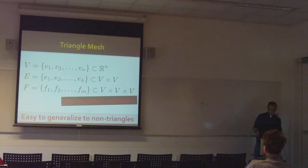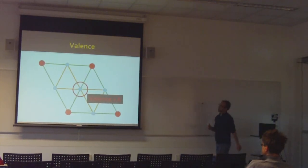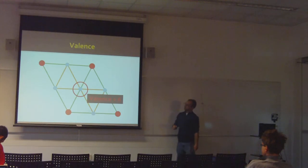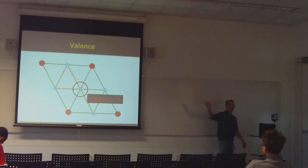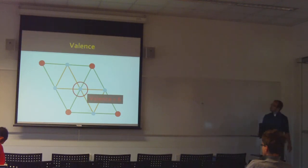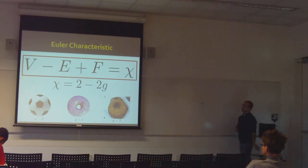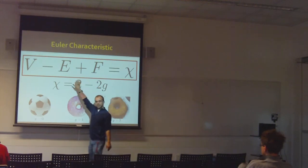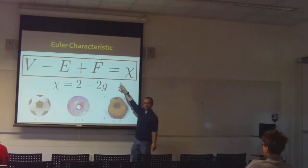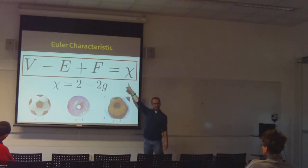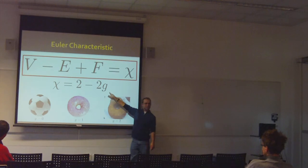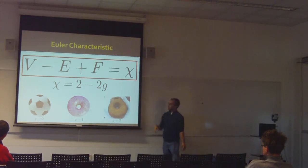The most important vocabulary word for triangle meshes is valence — sometimes called degree — which is the number of edges coming out of a vertex. The valence of the vertex drawn here happens to be six, which is an important number we'll return to. Probably one of the world's most famous theorems is the Euler characteristic formula: V minus E plus F equals χ, the Euler characteristic of your surface type. If your surface has g holes in it, the Euler characteristic is 2 minus 2g.